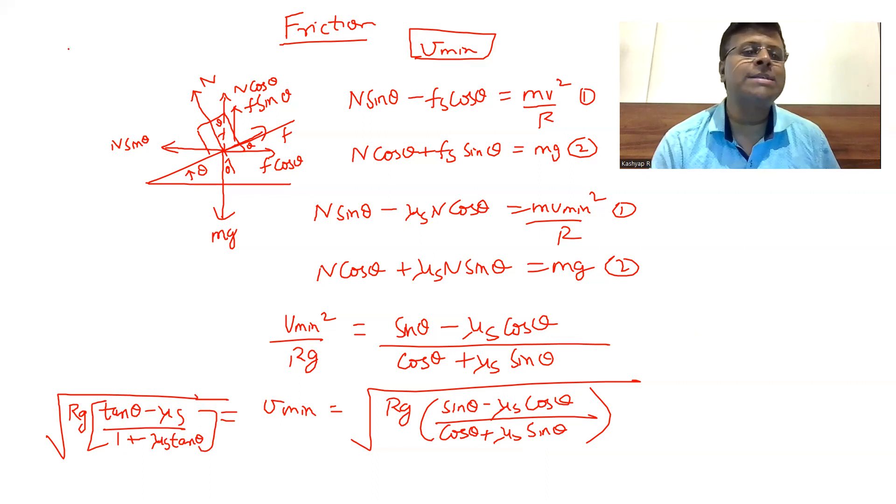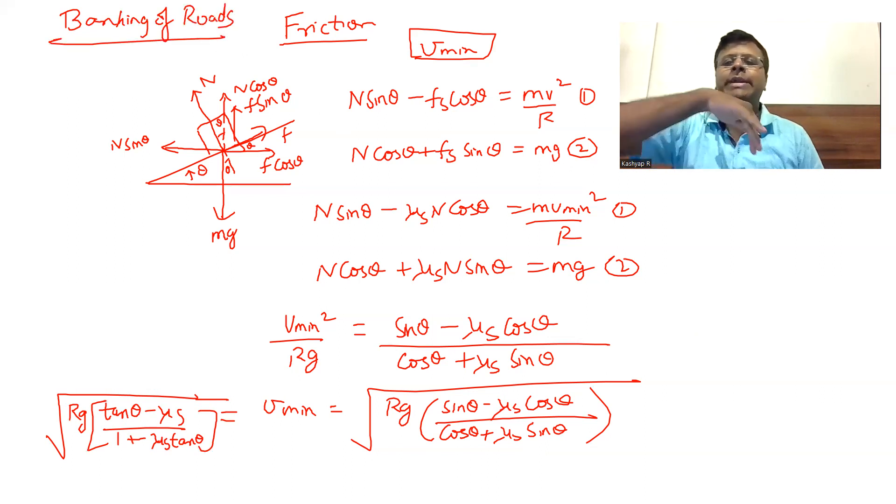This whole concept that I've spoken today is basically called banking of roads. Banking of roads talks about what should be the theta elevation so that you can travel with this minimum velocity. You can design the tracks for the minimum velocity, maximum velocity, and decide what the banking of the road should be. Even architectural engineers and civil engineers have to take help of physics. I hope this concept is clear. Thank you so much for watching.